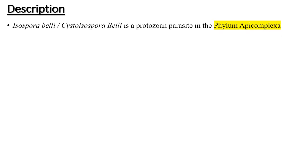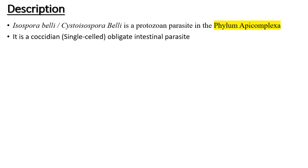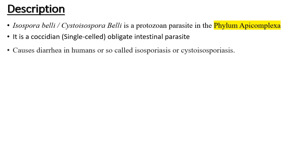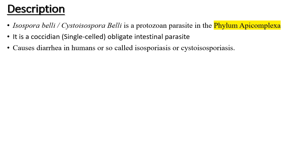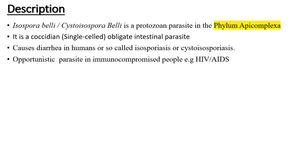Isospora belli is a protozoan parasite that belongs to the phylum Apicomplexa, meaning it does not contain appendages that aid it in movement but uses an apical complex for movement. It is a coccidian obligate intestinal parasite, meaning it depends on the host for completion of its life cycle. By coccidian, it is simply single-celled. It causes diarrhea in humans, the disease called isosporiasis or systemic isosporiasis. It is also believed to be an opportunistic parasite in immunocompromised people, for example those who live with HIV and AIDS.